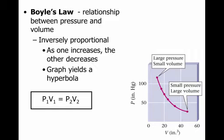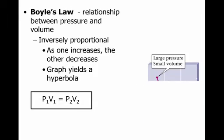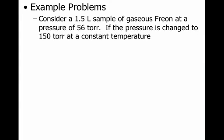The formula for Boyle's Law is P1V1 equals P2V2. So if we know the pressure and volume under certain conditions, and then we know one of those variables under changed conditions, we can then calculate the other one. We're going to do an example problem so you can see how that works.